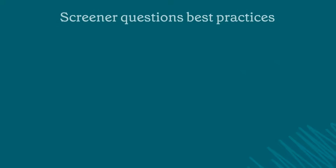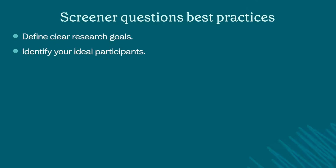Let's get into some best practices for writing screener questions. First, define clear research goals — know exactly what you want to learn from your participants. Next, identify ideal participants by considering factors like age, location, interests and behaviours.